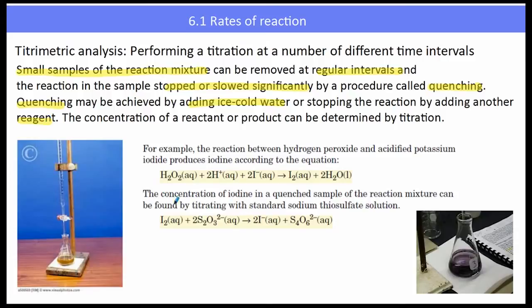An example here is given below between hydrogen peroxide and acidified potassium iodide, where we are determining how much I2 is in the solution via a titration.